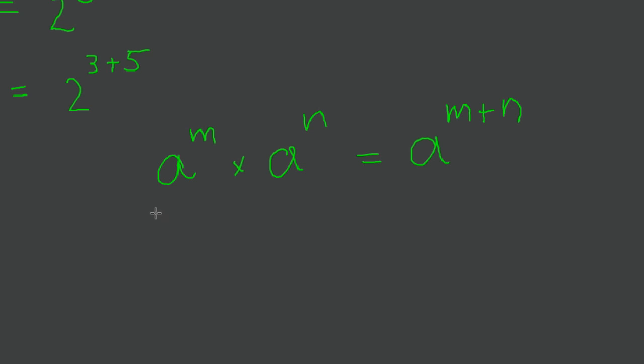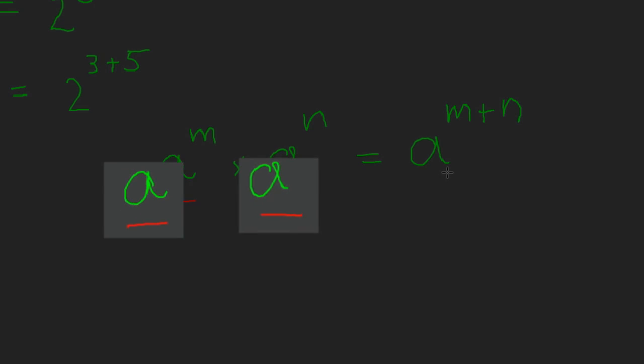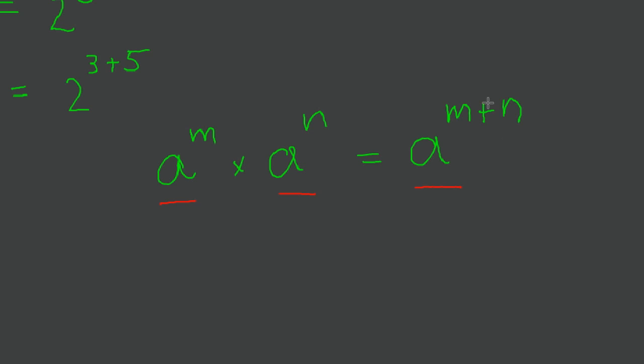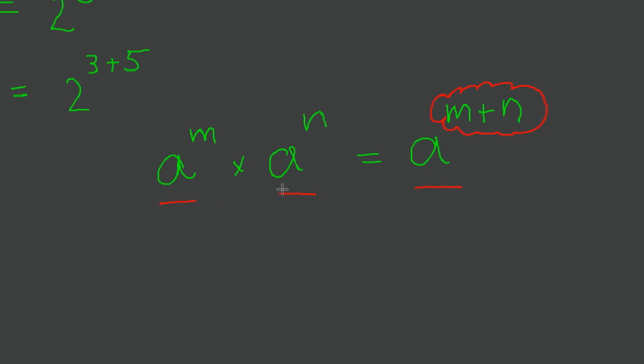In words, if you're going to describe this, you're going to say that if you have 2 powers with the same base being multiplied together, keep the base the same. So we do nothing with the base and simply add the exponents. So when multiplying 2 powers with the same base, keep the base the same and add the exponents.